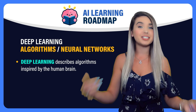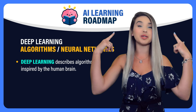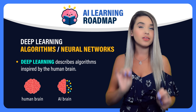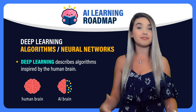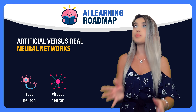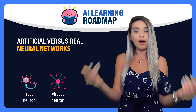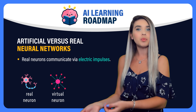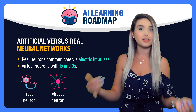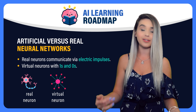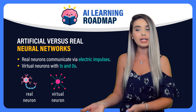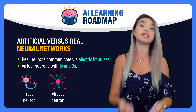Deep learning is a field of study inspired by the human brain. It mimics our process of thought with something called artificial neural networks. If a human brain has billions of neurons that all talk to each other with electrical impulses, then artificial neural networks have virtual neurons that talk to each other with ones and zeros — an electric impulse means one, and the absence of it means zero.